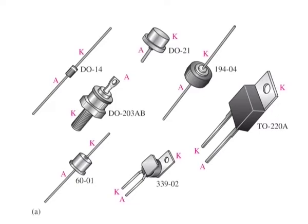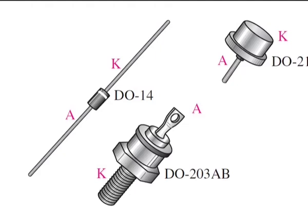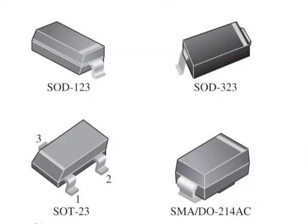Several common physical configurations of through-hole mounted diodes are illustrated here. These are typical diode packages shown with terminal identification. The letter K is used for cathode to avoid confusion with certain electrical quantities represented by C. Case type numbers are indicated for each diode. The cathode is usually marked by a band, a tab, or some other feature on the package. Where one lead is connected to the case, the case becomes the cathode.